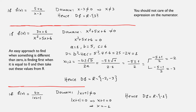Continuing with examples: if f(x) = (5 + x)/(x − 3), we should not care for the expression on the numerator — we simply care for the denominator. Here we have x − 3; we don't want that to be equal to zero. Hence, we accept all real numbers except three.